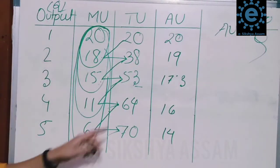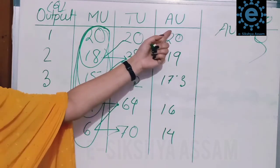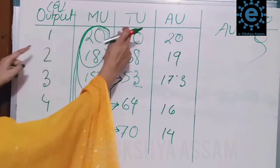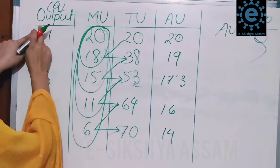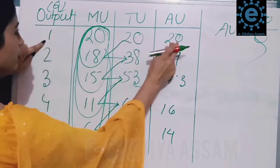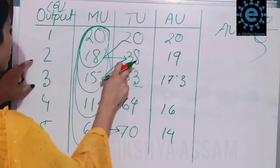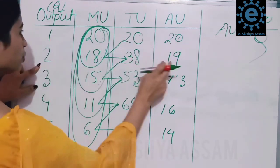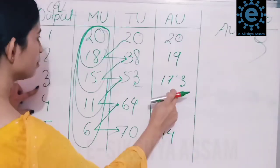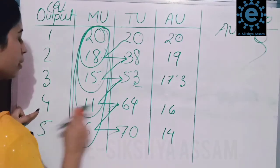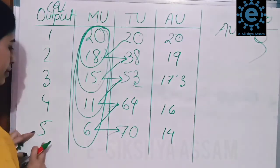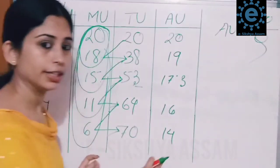So the average utility is calculated as total utility divided by output (Q). The values are: 20 divided by 1 is 20; 38 divided by 2 is 19; 53 divided by 3 is 17.3; 64 divided by 4 is 16; and 70 divided by 5 is 14. Average utility is decreasing as quantity increases.